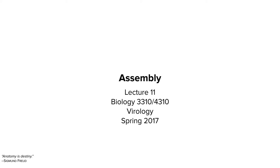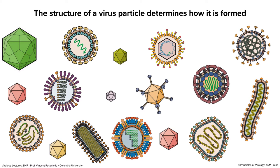Hello, good afternoon everybody. We've gone through almost all the replication cycle in the previous ten sessions. Now we're going to wrap that up and build some virus particles — we're going to talk about assembly today. My expectation is that by the end of today you could look at any of these virus particles on this slide and tell me how it's built, because the structure determines how it's formed. You should be able to look at an icosahedral particle, a nucleocapsid, an envelope virus — because there aren't that many different combinations.